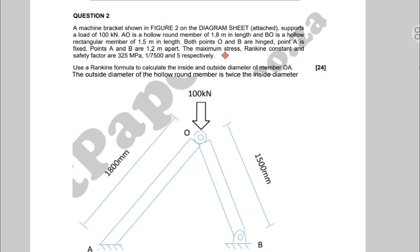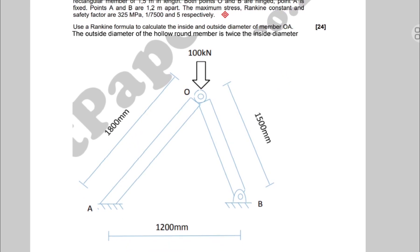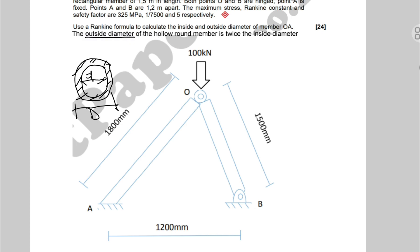Here is the structure we are going to be referring to. The section of AO is a circular section with outside diameter D and inside diameter d. We are given that the outside diameter is twice the inside diameter, so D equals 2d. Now we are going to use the Rankine formula to calculate the dimensions of member AO.